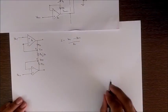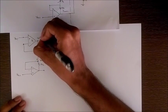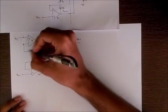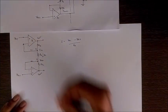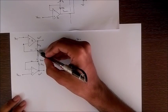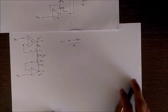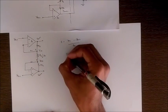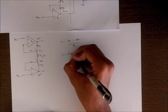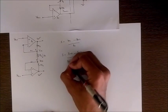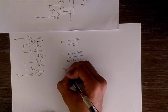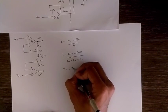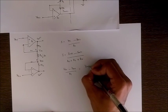The current through RG is given by I = (Vin1 - Vin2) / RG. Now, the output voltages are Vout1 and Vout2, and the current drawn by both terminals is zero. So the current passing through the whole branch is the same as the current through RG. Therefore, I = (Vout1 - Vout2) / (total resistance, which is the sum of all three resistors).